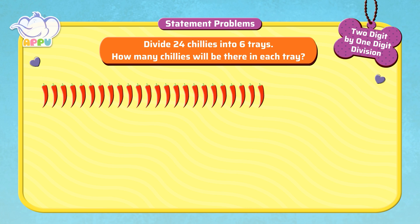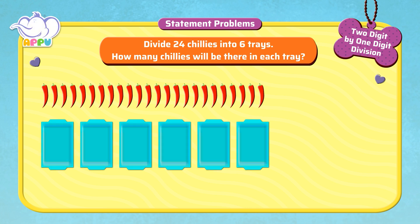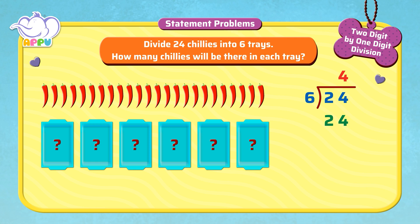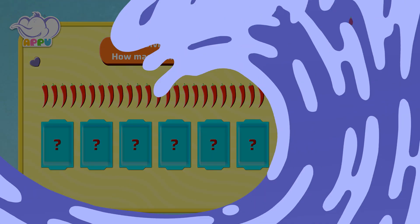Divide 24 chillies into 6 trays. How many chillies will be there in each tray? We find this by dividing 24 by 6. We figure out how many 6's does it take to make 24, which is 4. 6 times 4 equals 24. We subtract 24 from 24.